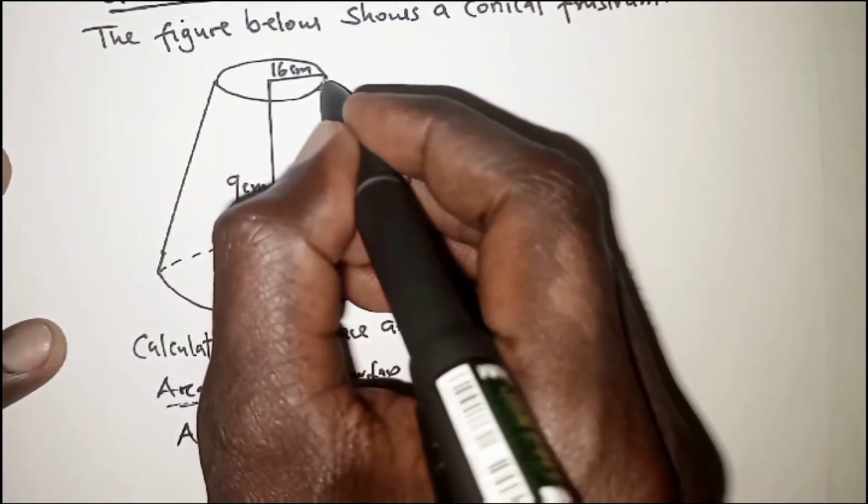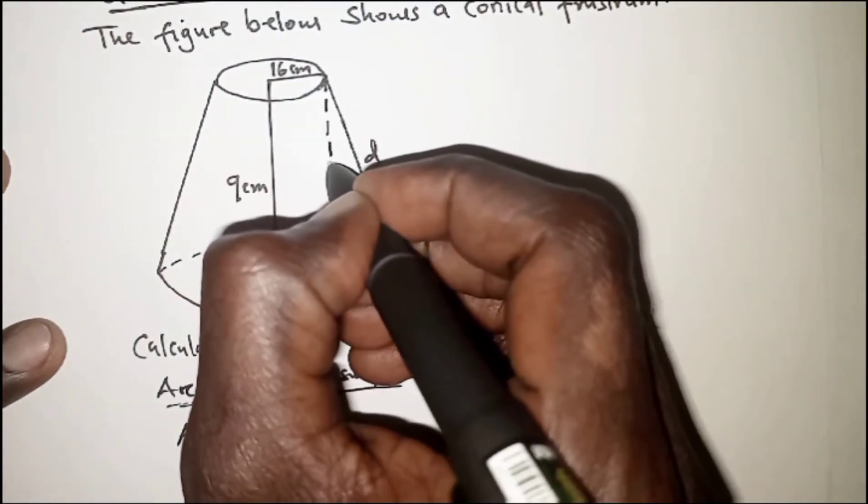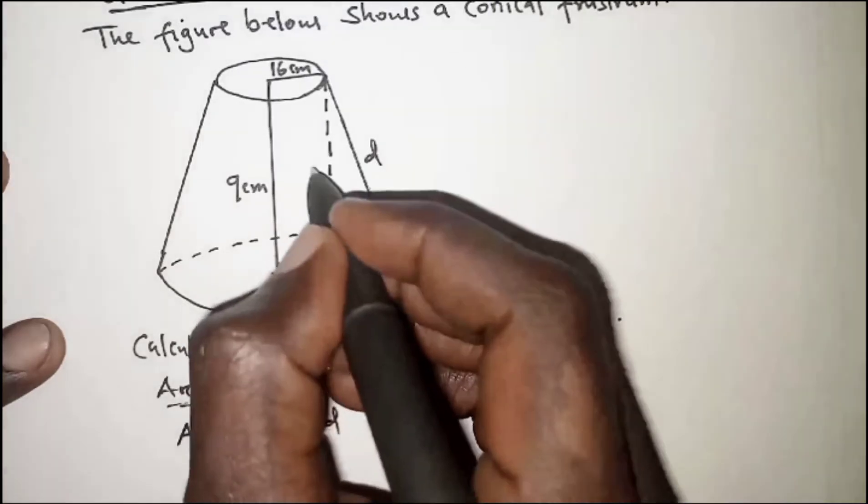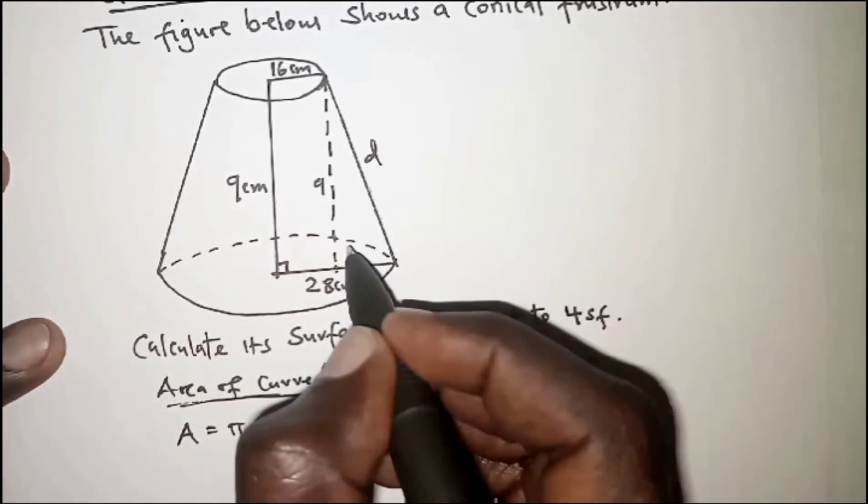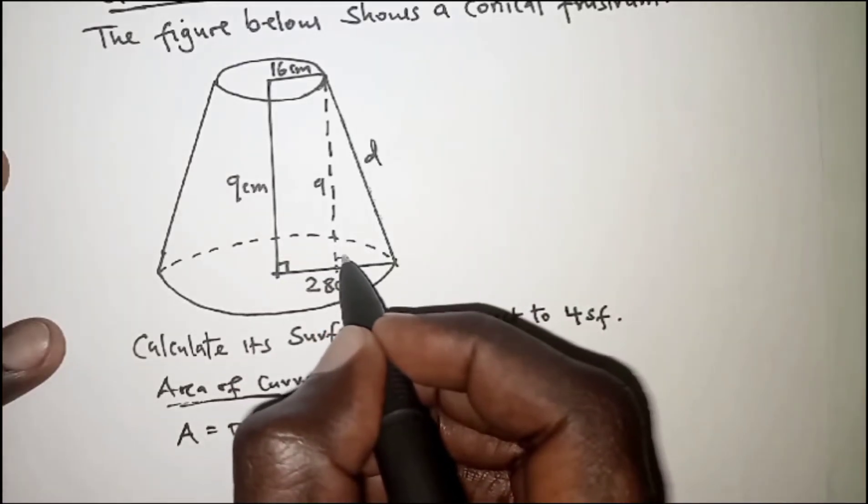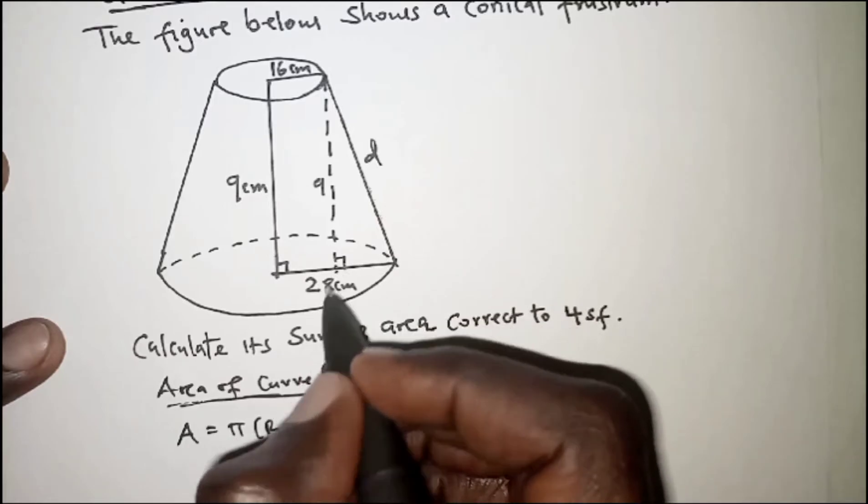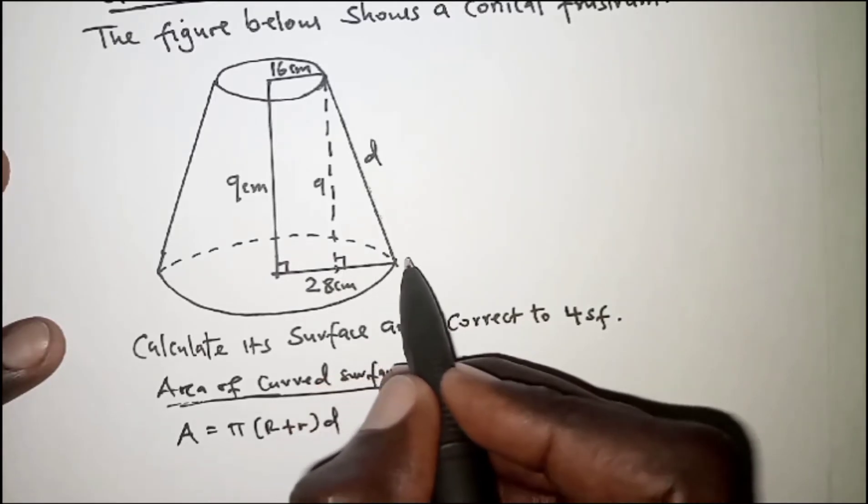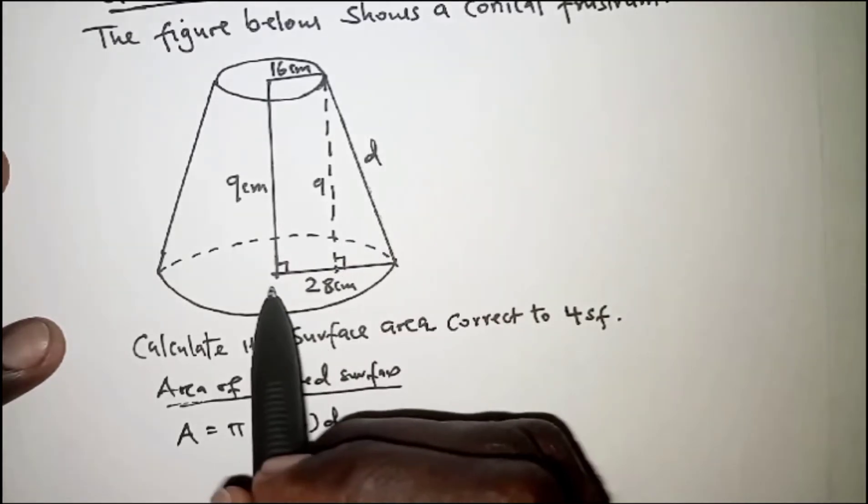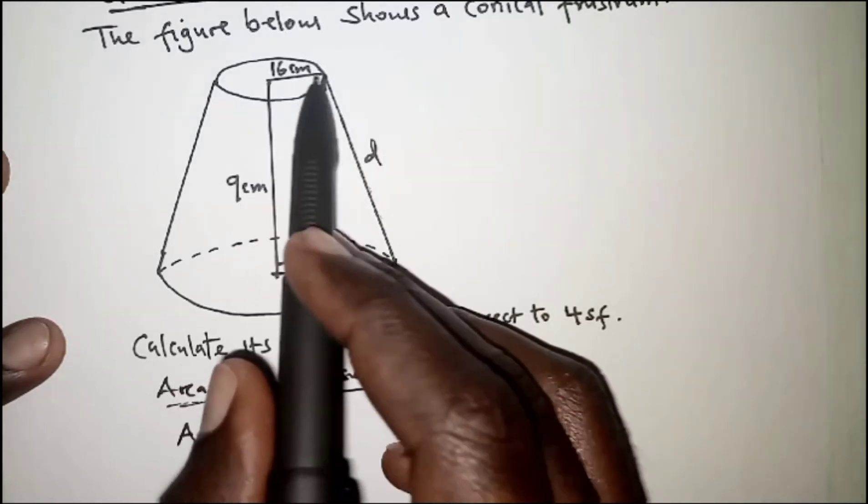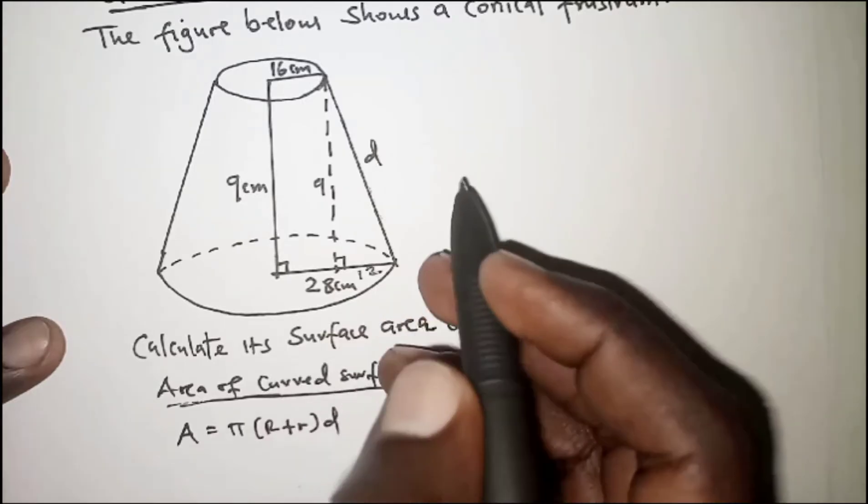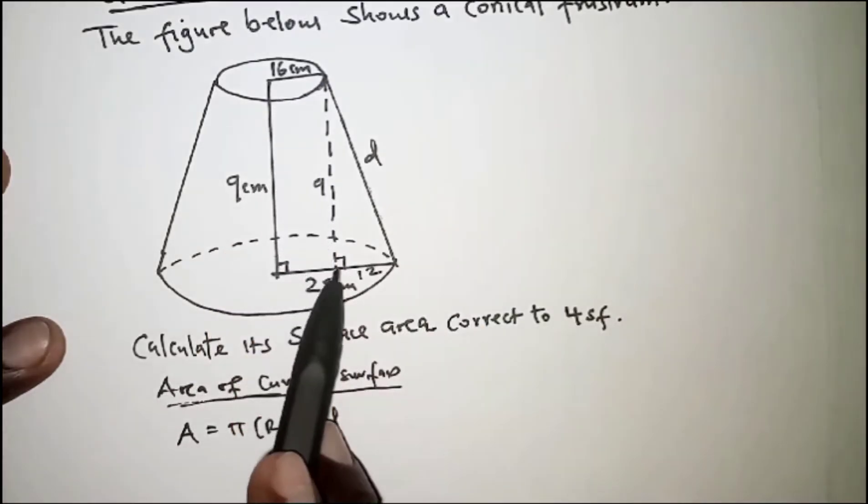Remember here from that point to this other point we have the height as 9, and the line here meets the radius down here at 90 degrees. So the length from this point to this point should be the difference between 28 and 16, so 28 minus 16, that should be 12. So we have a right angle triangle right here.